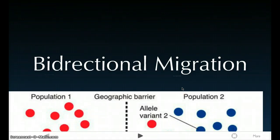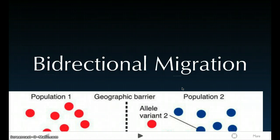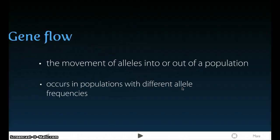Basically, the movement of individuals between populations changes allele frequencies. Because if the group migrating has different or new alleles and they breed with the larger population that was there before them, they're introducing new alleles and changing the allele frequencies. Gene flow is known as the movement of alleles into or out of a population, and this occurs with populations with different allele frequencies.